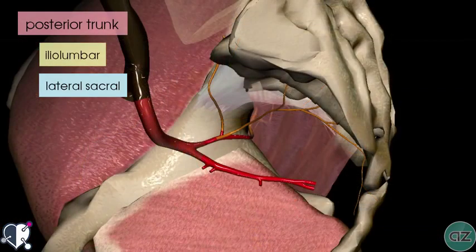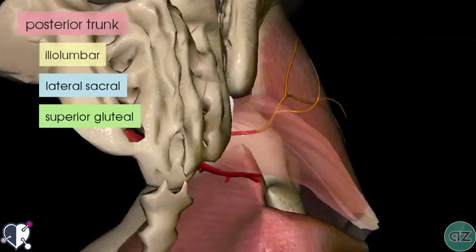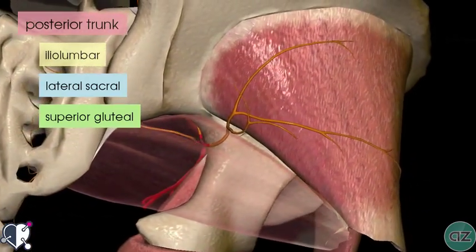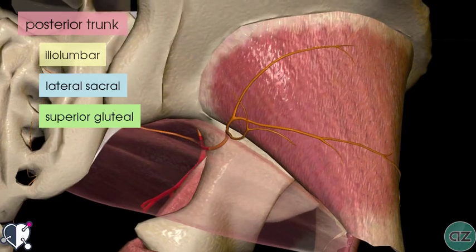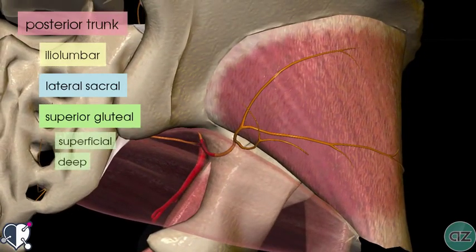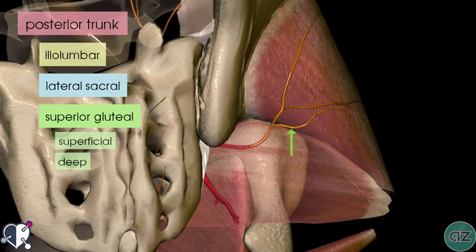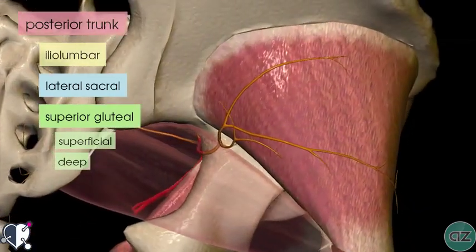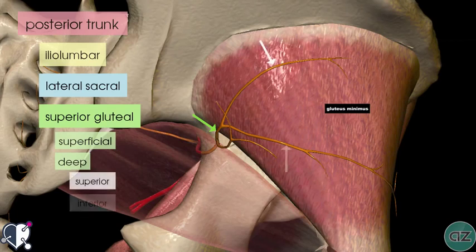The third branch of the posterior trunk is the superior gluteal artery. You can see it exiting posteriorly, and rotating the model, you can see how it exits just above the piriformis muscle in the greater sciatic foramen. It has deep and superficial branches. The superficial branch comes off here, and the deep branch is adherent to the gluteus minimus muscle, dividing further into superior and inferior branches.